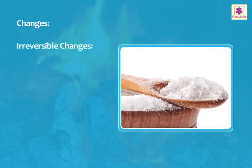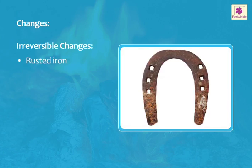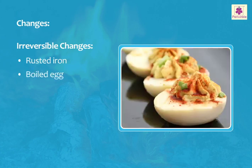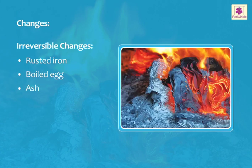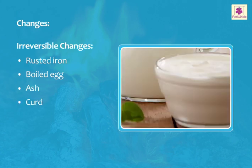Some changes are irreversible. Rust turns an iron object brown. A boiled egg cannot be changed into a raw egg. A pile of ash cannot be changed back into wood. Once milk is changed into curd, it cannot be changed back into milk.